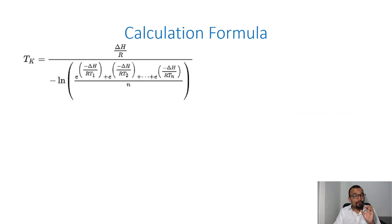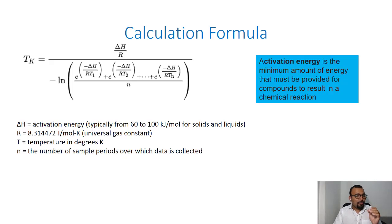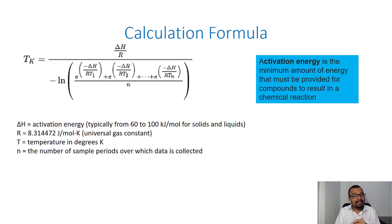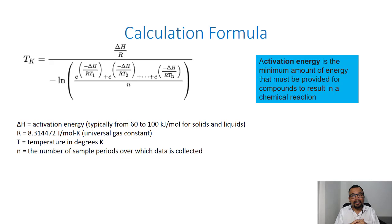This is the calculation formula for mean kinetic temperature. It looks a little complex, but don't worry, we are actually going to calculate the MKT. Delta H stands for activation energy, typically 83 to 100 kilojoules per mole for solids and liquids. R is the universal gas constant. T is the temperature in degrees Kelvin. N is the number of sample periods over which data is collected — the number of time points at which the temperature is measured.